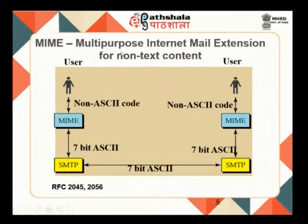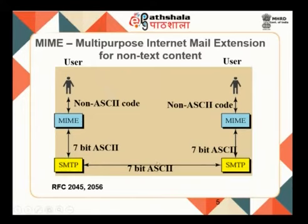MIME also has other details to it, but what we are concerned about here is the code conversion part. What happens is that when you have any non-ASCII file or non-ASCII data that needs to be sent, it is put through MIME, converted into 7-bit ASCII, and once converted it can be sent through the SMTP protocol. On the other side, MIME will convert it back into the original non-ASCII format.